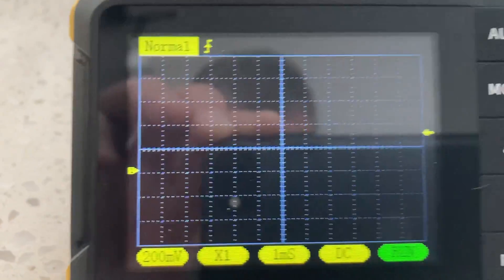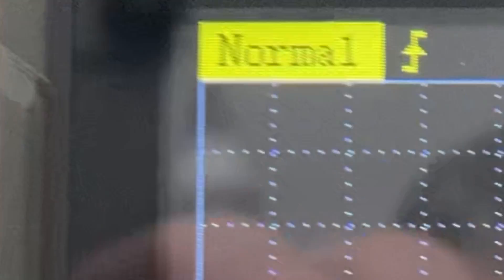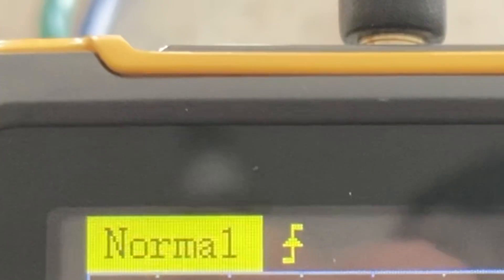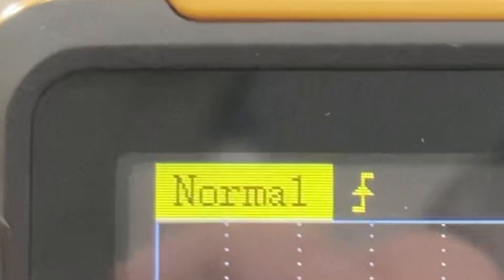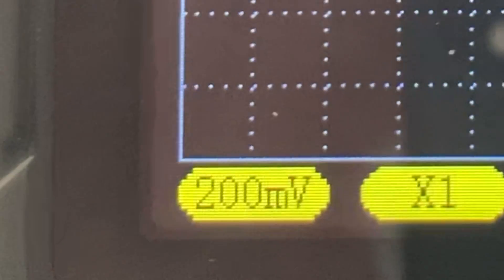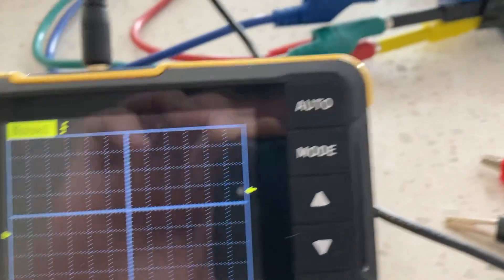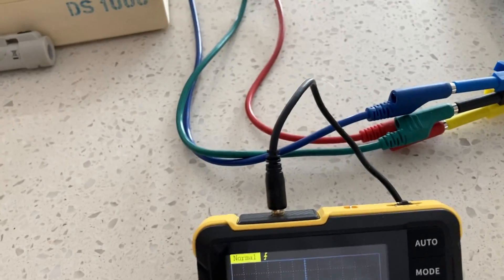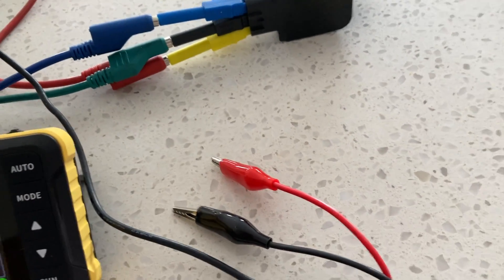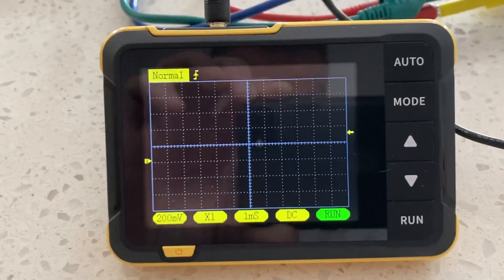So there's my settings. You can see I've got the trigger on normal on the rising edge, 200 millivolts per division. There's no attenuation required, there is no fancy probes. This is just the simple leads that come with the rig.